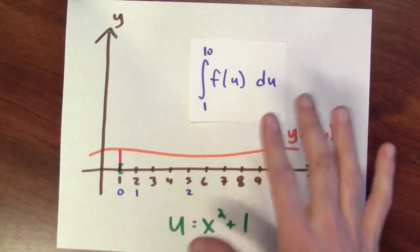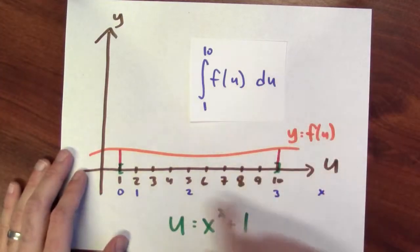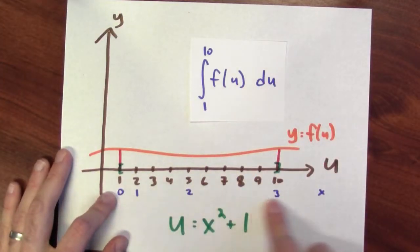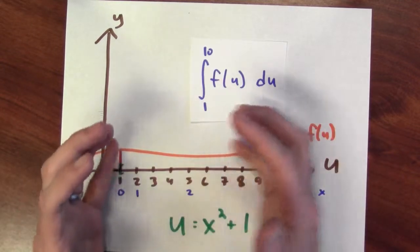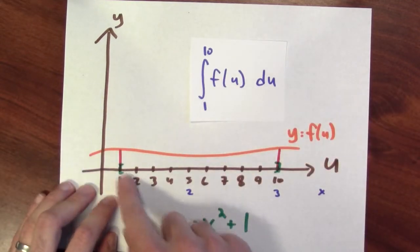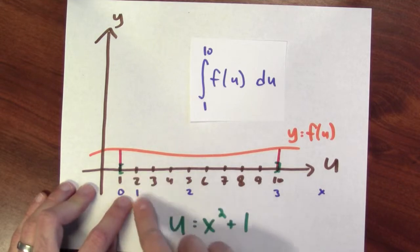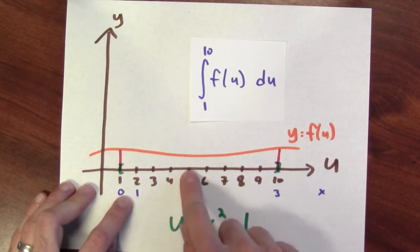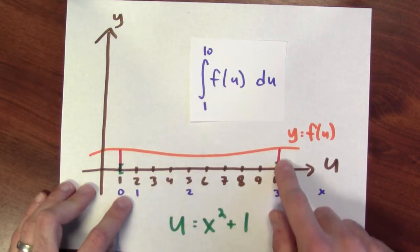And I can imagine that in the graph, transforming from the u coordinates to these x coordinates. Well, the u coordinates are more stretched out, right? When x is 0, u is 1. When x is 1, u is 2. When x is 2, u is 5. And when x is 3, u is 10.